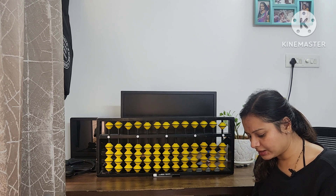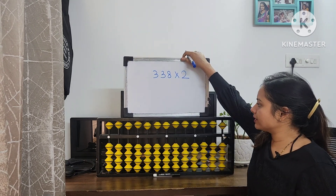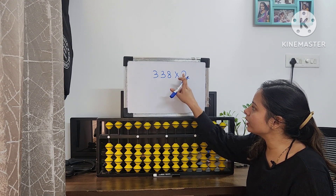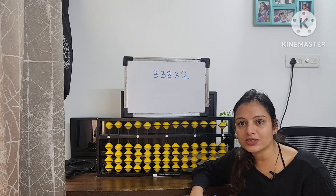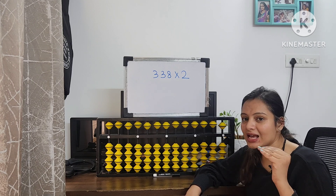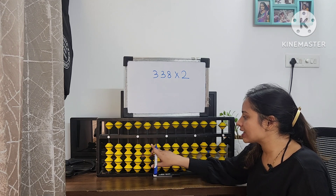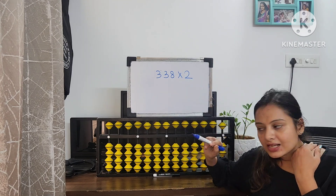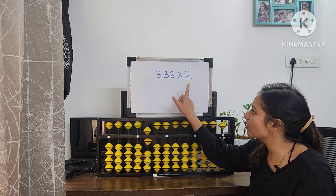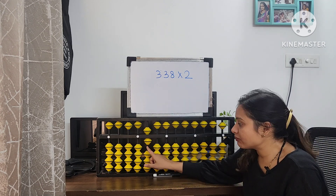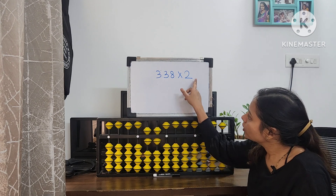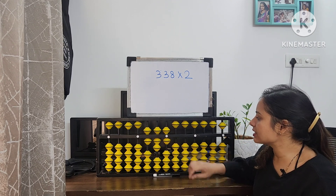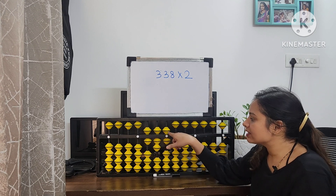For 338 × 2: 2 threes are 6, that is 06. We place 0 and 6. Again, 2 threes are 6 — place 06. Now 2 eights are 16. We start from where we ended the first number. 16 means 10 and 6. So we have our answer at 676.